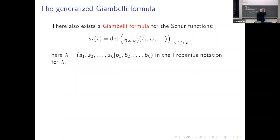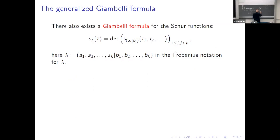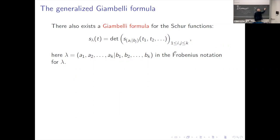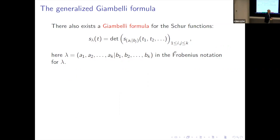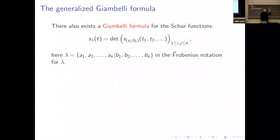For example, lambda = (3,2,1,1): the diagonal gives entries like (2|0) and (3|...). You also have to account for zeros because you want to distinguish partitions. What you get is a strict partition for the a's and also for the b's (with possible zeros). This Frobenius notation involves something like hooks in the diagram. This gives the well-known Giambelli formula for Schur functions.